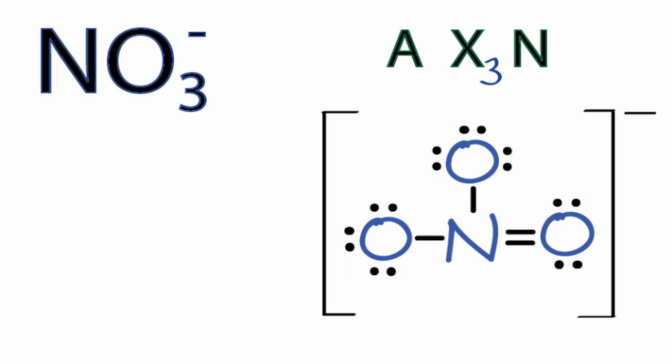And N is the number of non-bonded electron pairs on that nitrogen. Well, we don't have any non-bonded electron pairs, so we're not going to worry about this. So that gives us AX3.